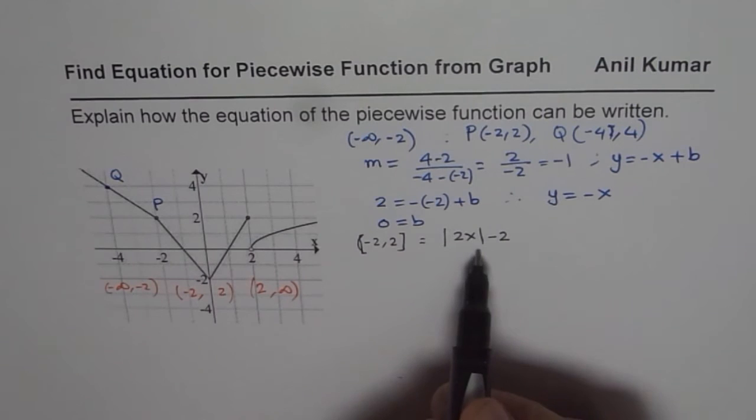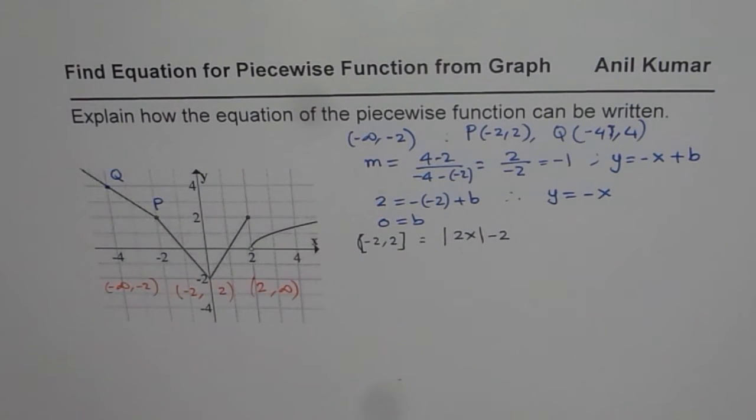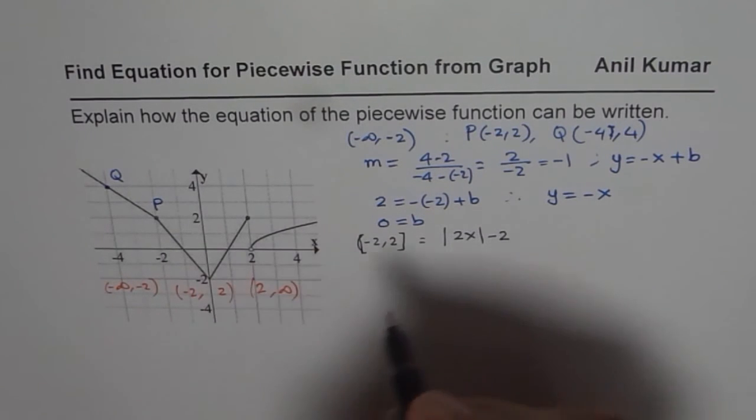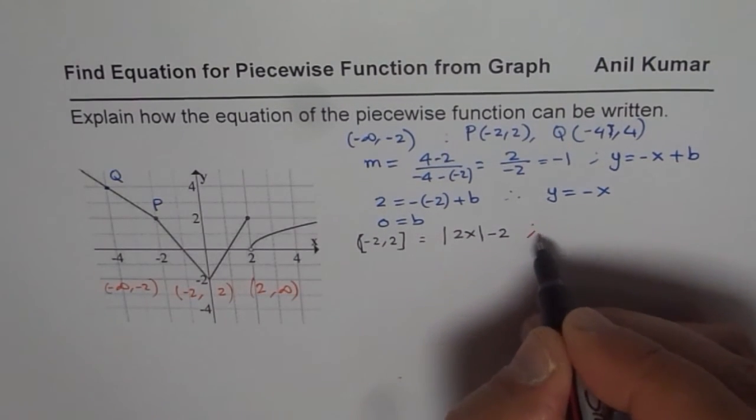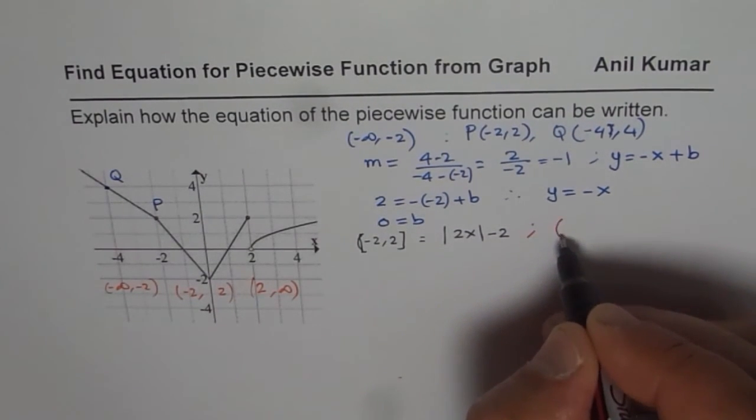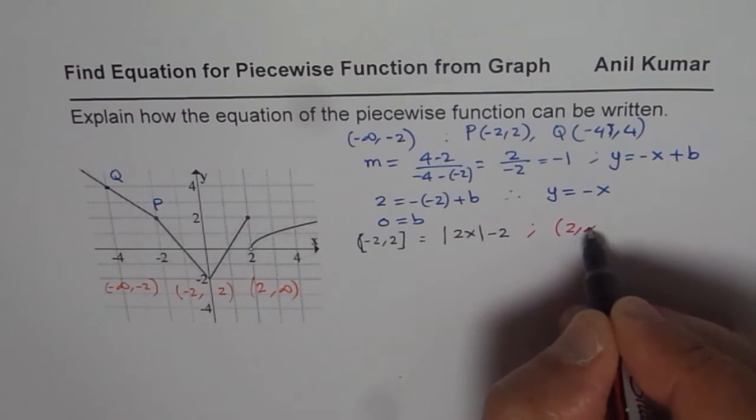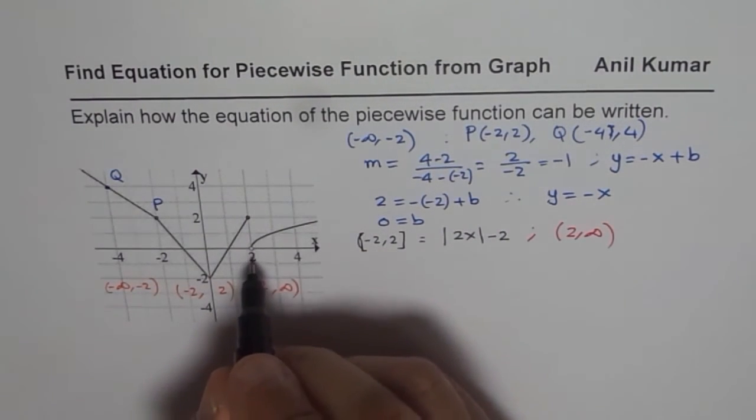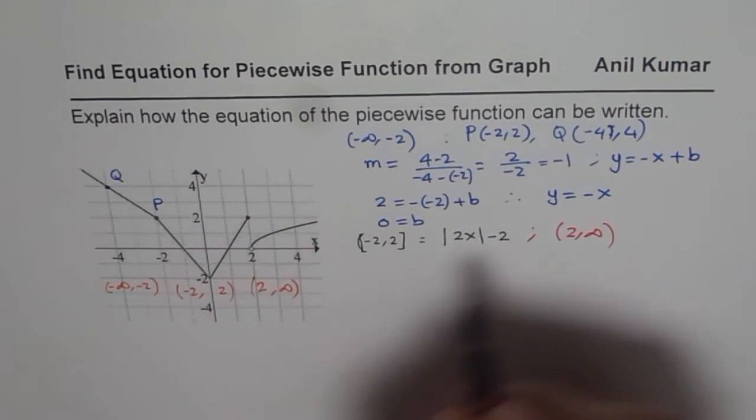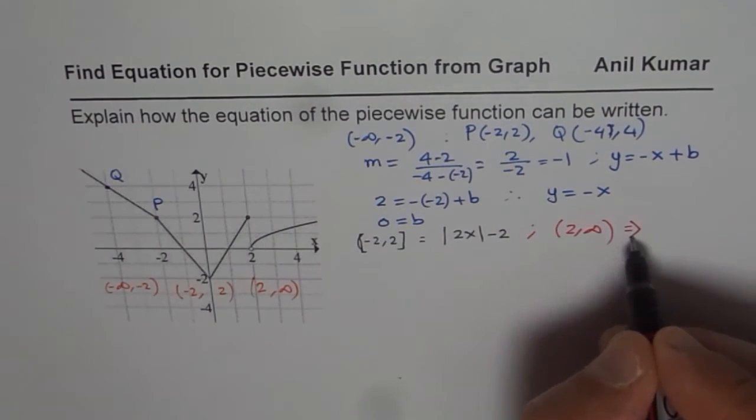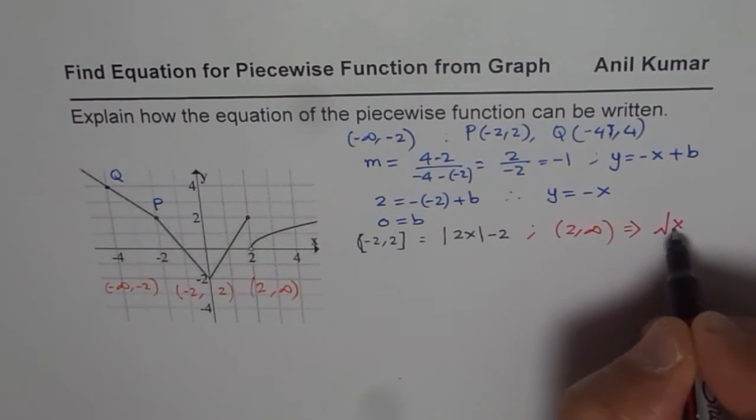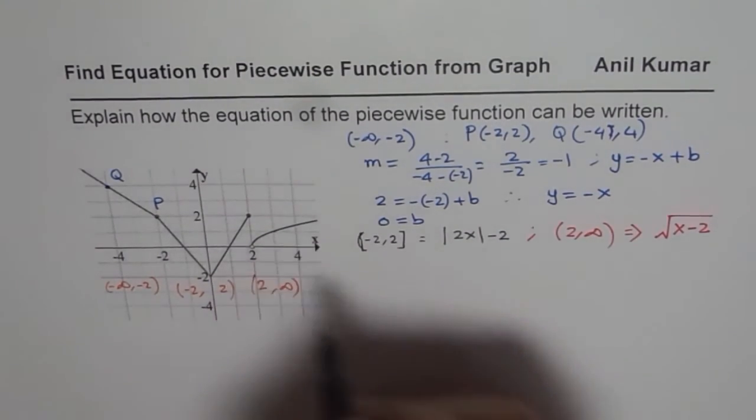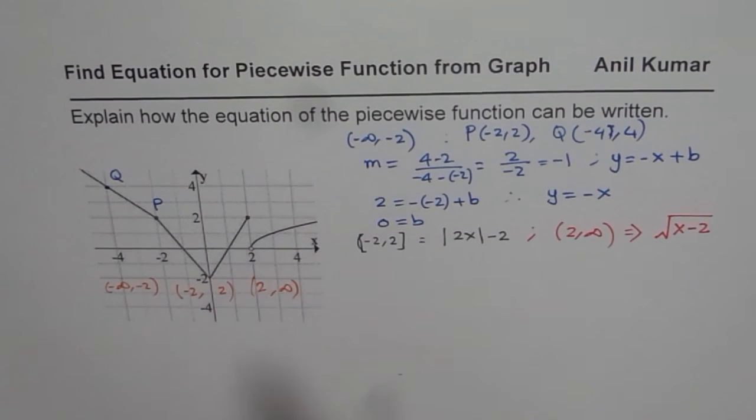So that seems to be the equation for the absolute function. And the third equation which we have here looks like a square root function. So from 2 to infinity, it looks like it's a square root function which has been translated two units to the right. So this looks like a square root of x minus 2. At one unit away, it is one. So there is no vertical stretch or compression.